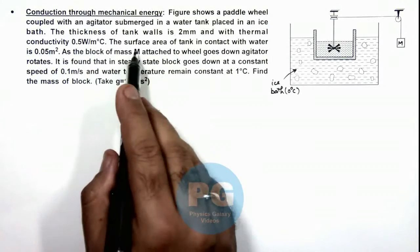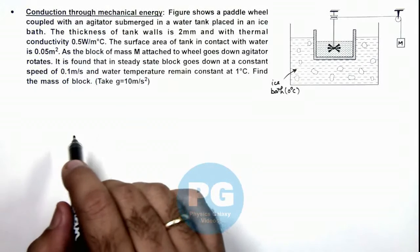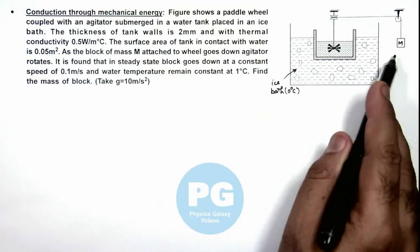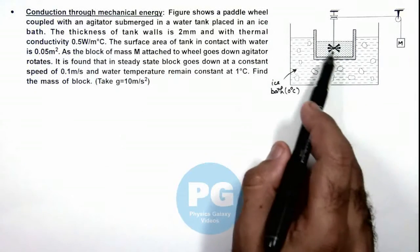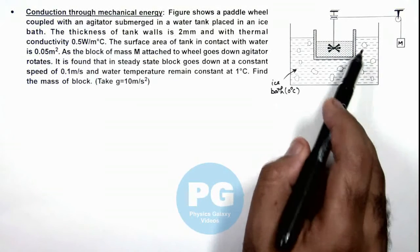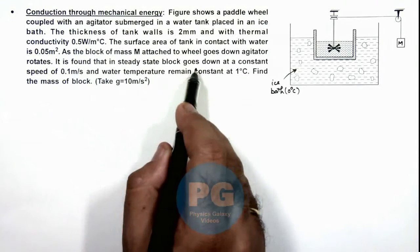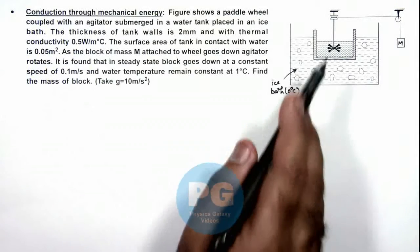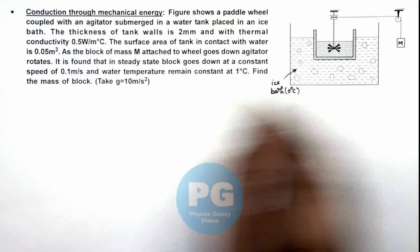The surface area of the tank in contact with water is 0.05 square meters. A block of mass m is attached to the wheel. As the block goes down, the agitator rotates and does work on the water, raising its temperature, and heat starts conducting to the ice bath. At steady state, the block descends at a constant speed of 0.1 meters per second, and the water temperature remains constant at 1 degree Celsius above the ice bath. We are required to find the mass of this block.